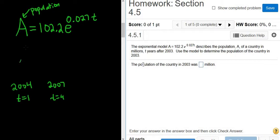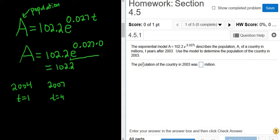Well, 2003 is zero years after 2003, so we plug in zero. So this is 0.027 times zero. This is 102.2, sounds like a radio station, E to the 0, because this is just 0, right? So E to the 0, because 0 times anything is 0.